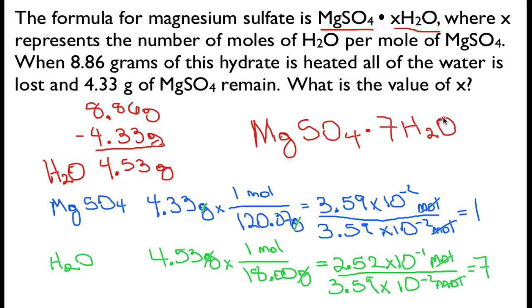So that's the way we did that. Those steps are pretty straightforward. The chemical formula for hydrated magnesium sulfate is MgSO4·7H2O. Thank you very much for watching. I hope that was helpful.